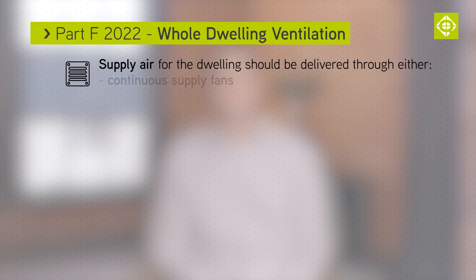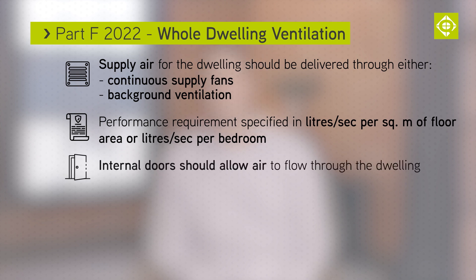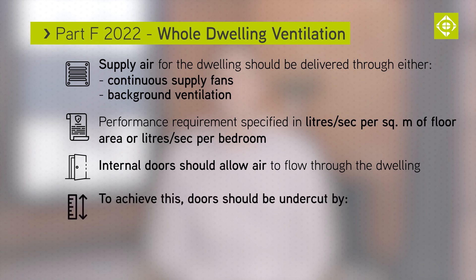Supply air for the dwelling should be delivered through either a continuous supply fan or background ventilation. The performance requirement is specified in litres per second per metre square of floor area, or litres per second per bedroom. Internal doors should also allow air to flow through the dwelling.